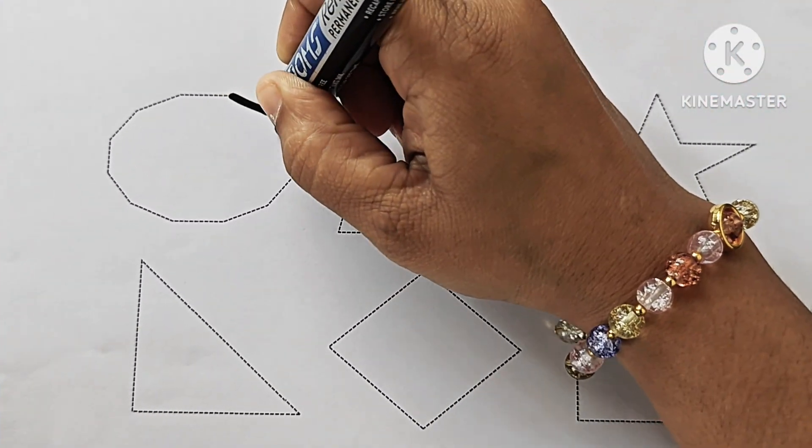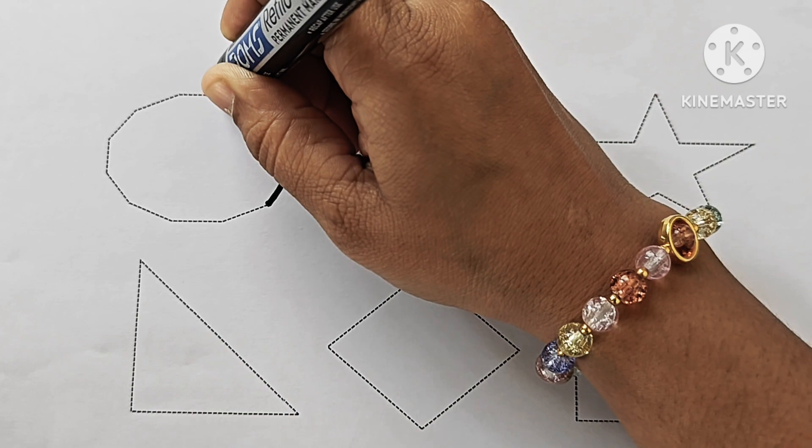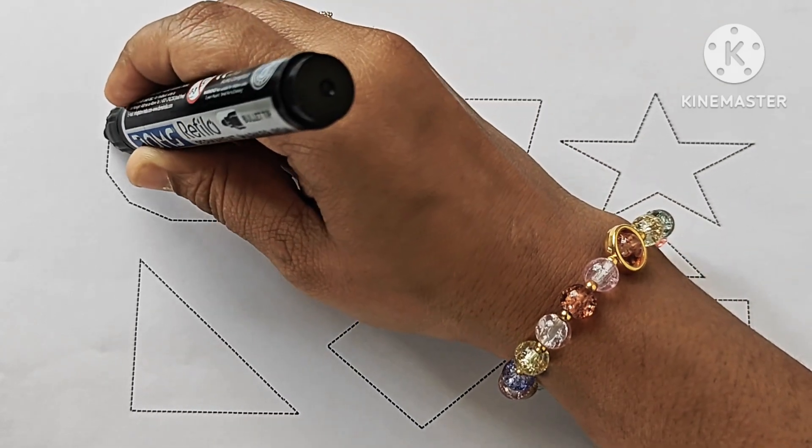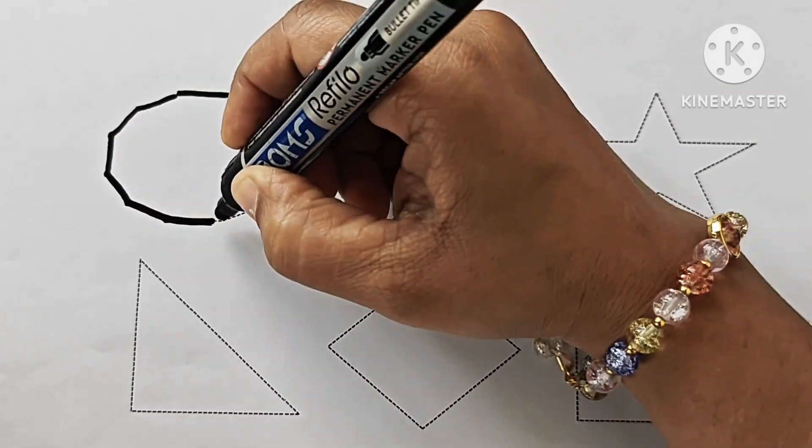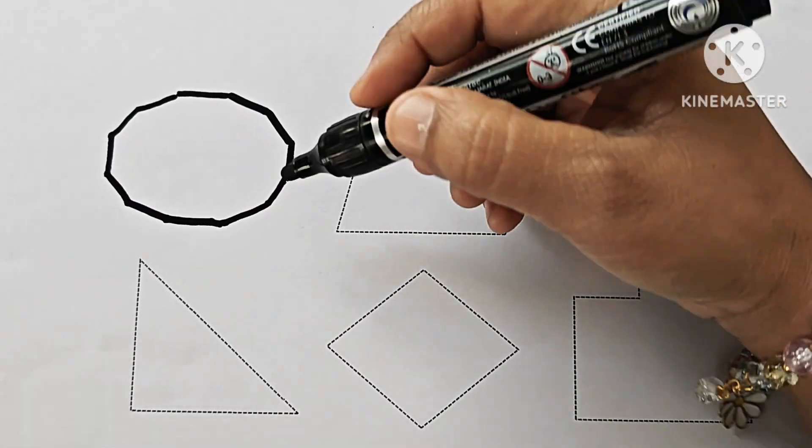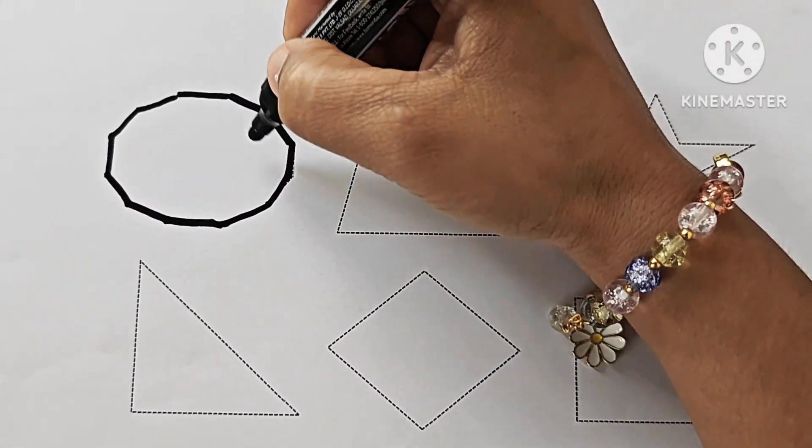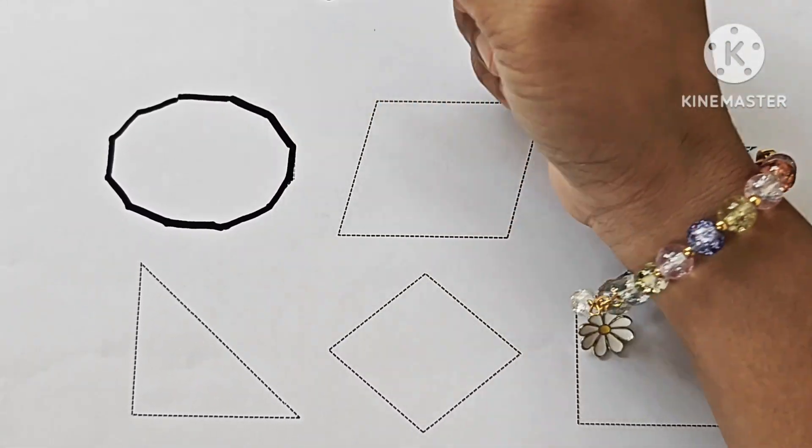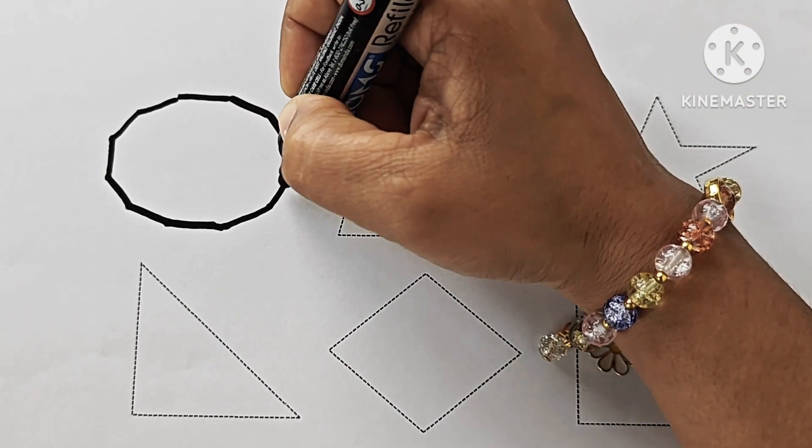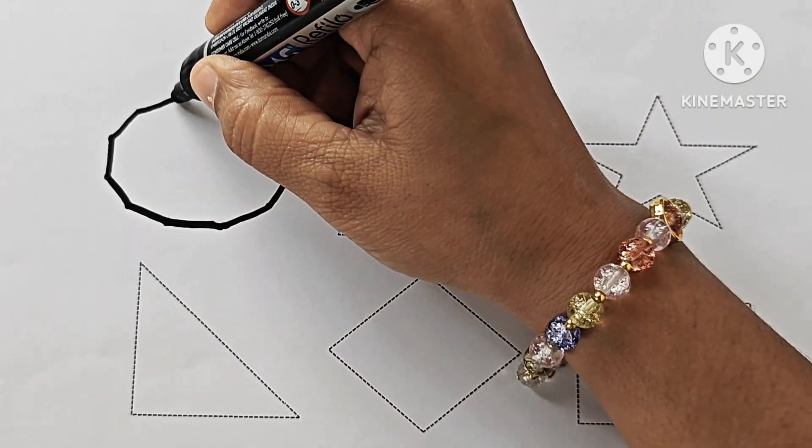Now, let us draw these shapes. This is Rodeca Gun. It has 12 points and 12 sides. 1, 2, 3, 4, 5, 6, 7, 8, 9, 10, 11, 12.